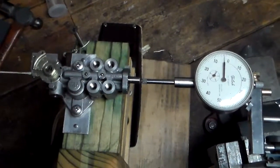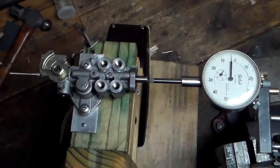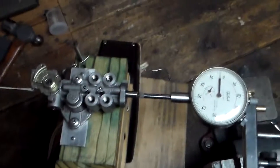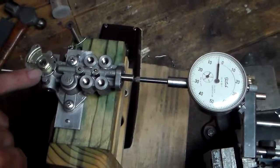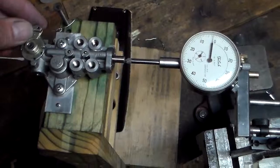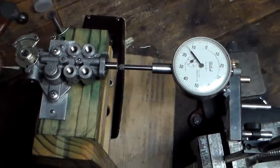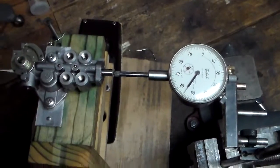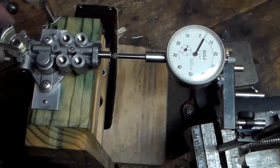So I slid that in there so I can get a dial indicator on the end so you can kind of see what happens here. And you'll see I have this marked, and that's our theoretical zero position, and then there's a 50% position and there's the 100% position.